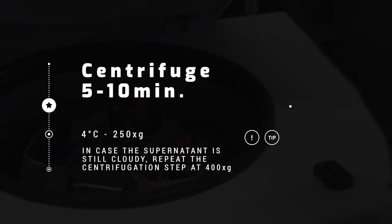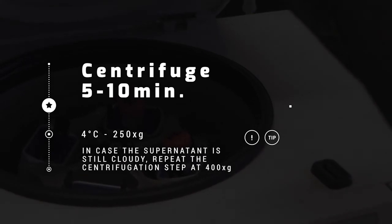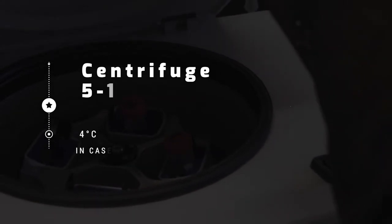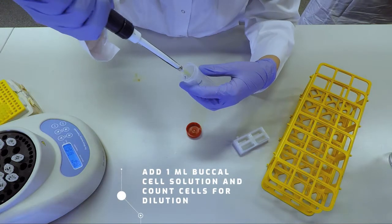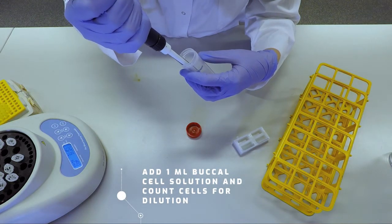Centrifuge at 250 g for 5 to 10 minutes at 4 degrees Celsius. Remove the supernatant, add 1 milliliter of cell buffer, and count the cells if necessary for dilution.